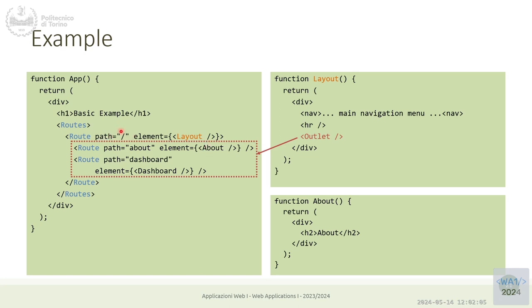If the path is slash/about, should we render Layout or About? When we have nested routes each level specifies a component to render. That's the role of Outlet — it allows us to render more than one component. If the path matches, we do render Layout, but Layout inside should have a placeholder called Outlet. Outlet means: here I want you to insert the content selected from my nested child routes.